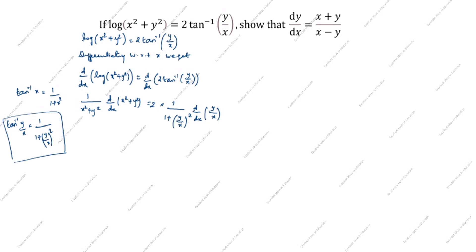Continuing the left side: 1/(x² + y²) × (differentiation of x² gives 2x, differentiation of y² gives 2y·dy/dx). So the left side becomes 1/(x² + y²) × (2x + 2y·dy/dx).